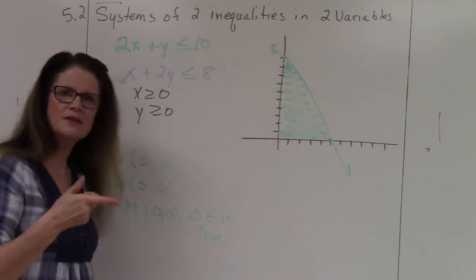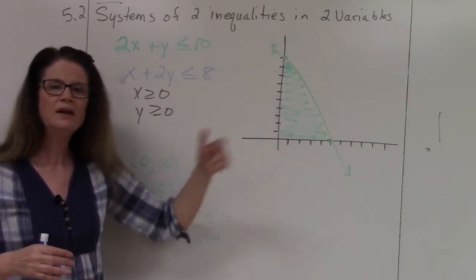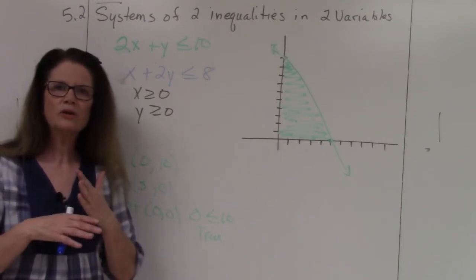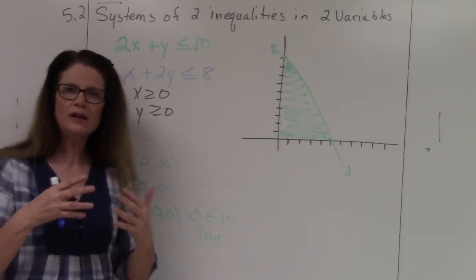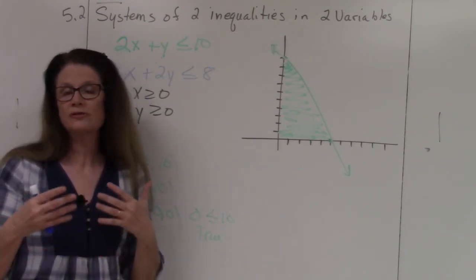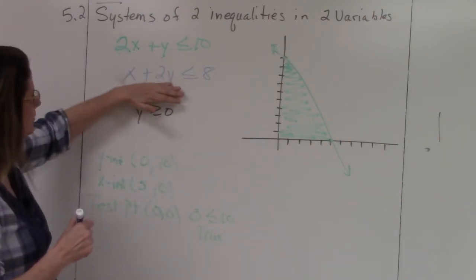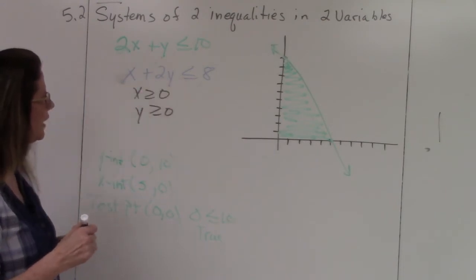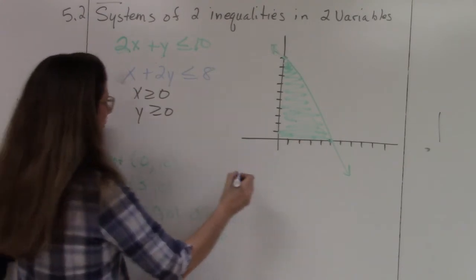Here's where this is different from 5.1 — in 5.1 we would have been done. In 5.2, we have two equations to graph together. Where the two shadings intersect, that will be the solution set, or the feasible region. So let's do the second inequality: x + 2y ≤ 8, which I'll indicate in blue.